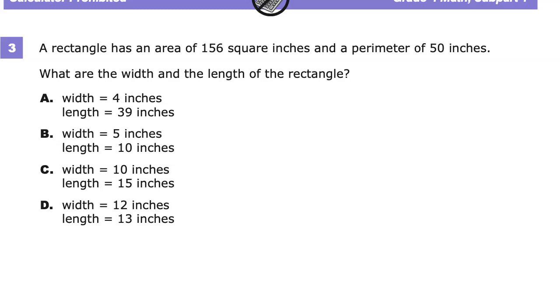This is the grade 4 math practice test for TN Ready. On this version of the test, it's question number three. A rectangle has an area of 156 square inches and a perimeter of 50 inches. What are the width and length of the rectangle?